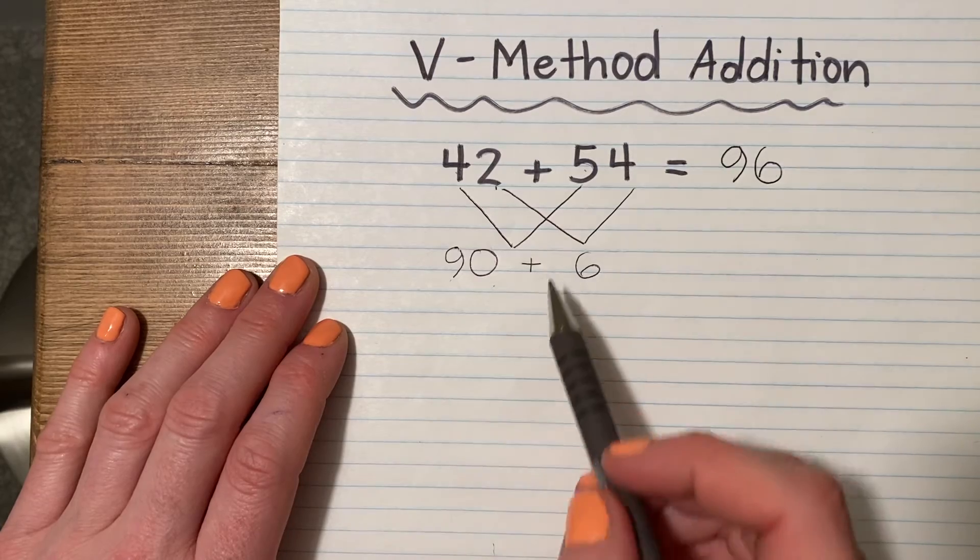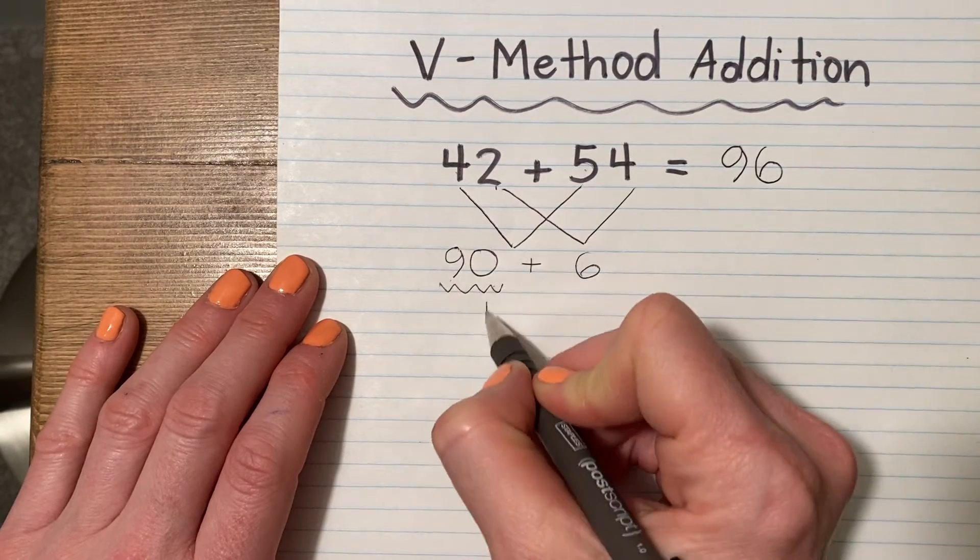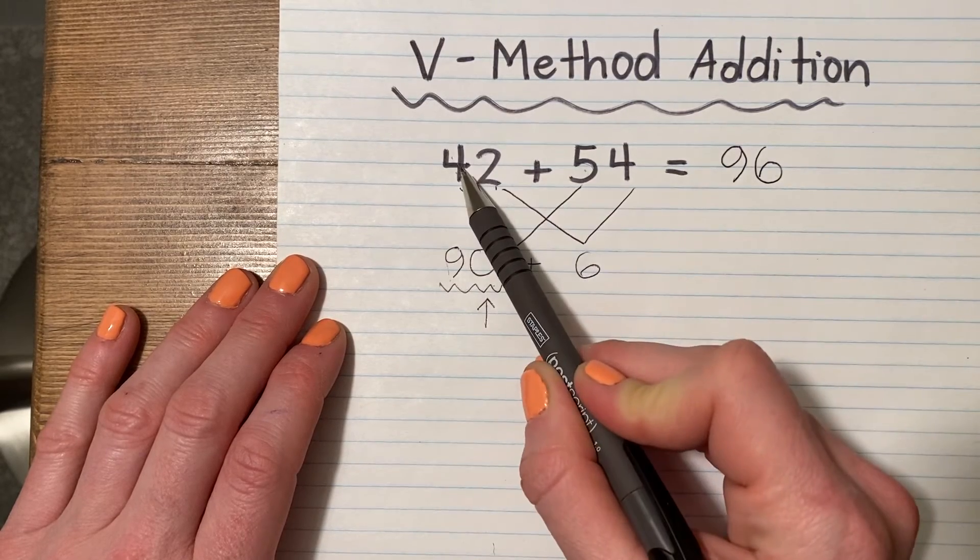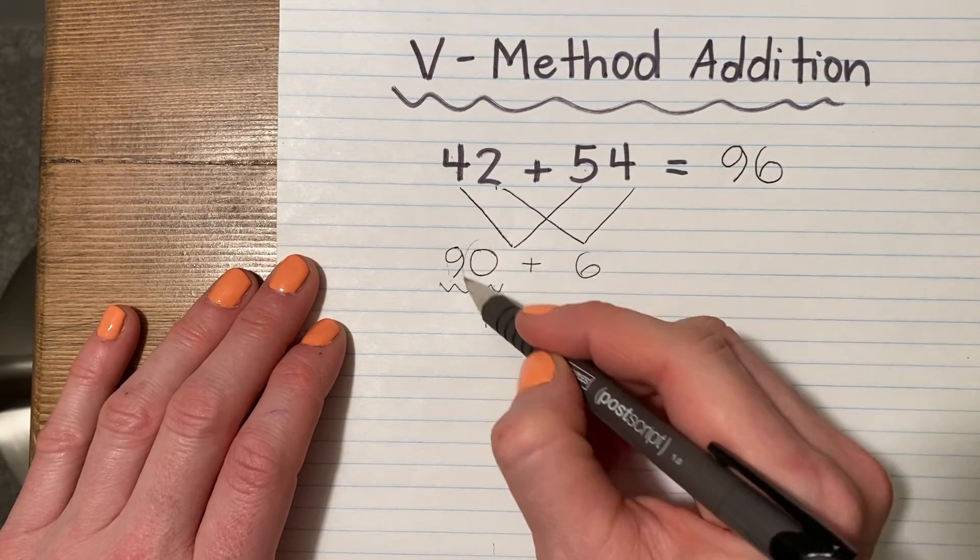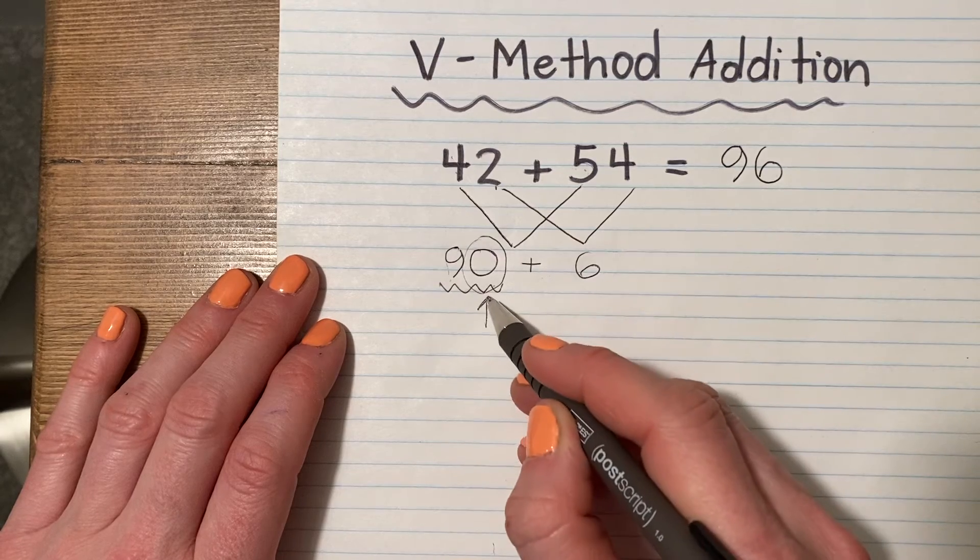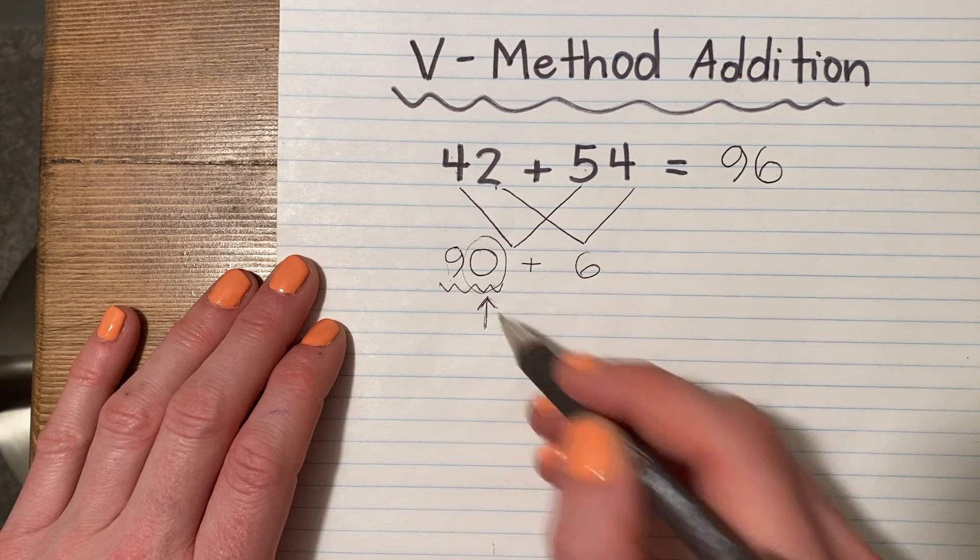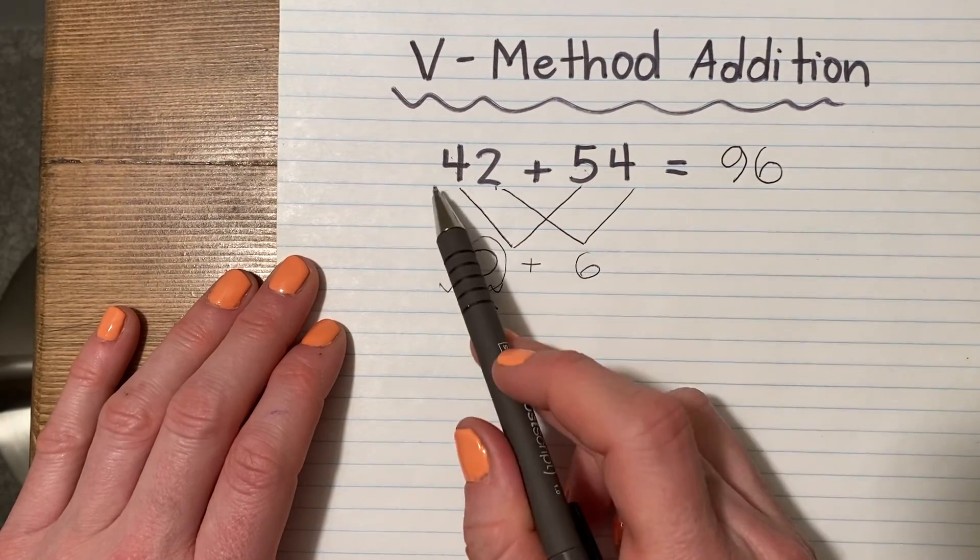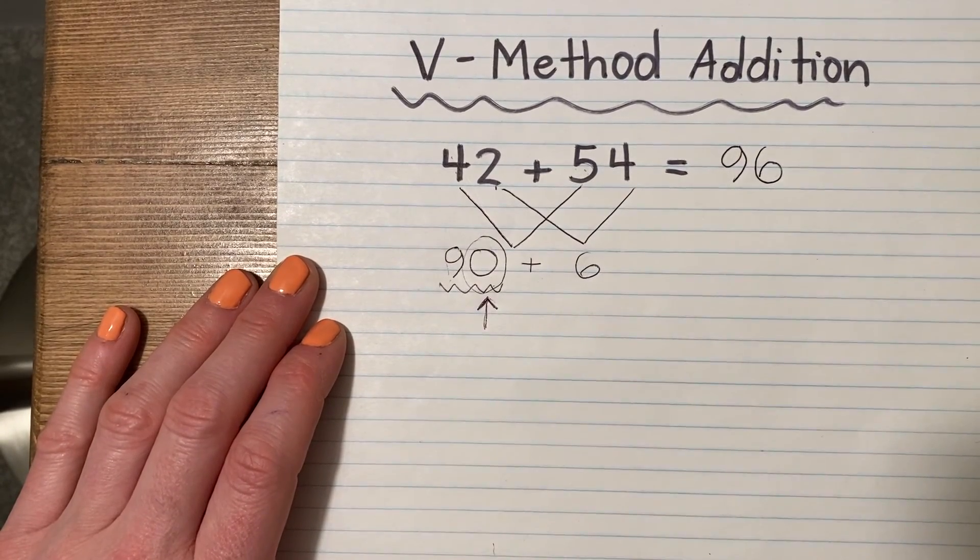It's pretty simple. The only tricky part is remembering that this is not 4 plus 5. It's 40 plus 50. It's really important to remember to put in that 0. That's where most students get confused. But if you can remember that, then it's not too confusing.